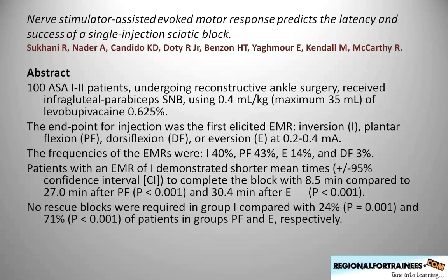This paper from Illinois, USA, done by Sukhani et al., titled 'The Nerve Stimulator Assisted Evoke Motor Response Predicts the Latency and Success of Single Injection Sciatic Block,' took 100 ASA 1 and 2 patients who underwent reconstructive ankle surgery. They received a sciatic nerve block using about 35 mL of levobupivacaine and studied the endpoint of injection — the first elicited motor response — which could have been inversion, plantar flexion, dorsiflexion, or eversion at 0.2 to 0.4 mA. The most common responses obtained were inversion and plantar flexion, whereas eversion and dorsiflexion were least commonly obtained.